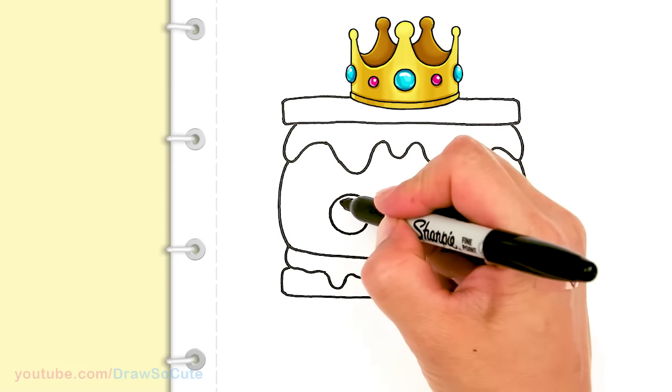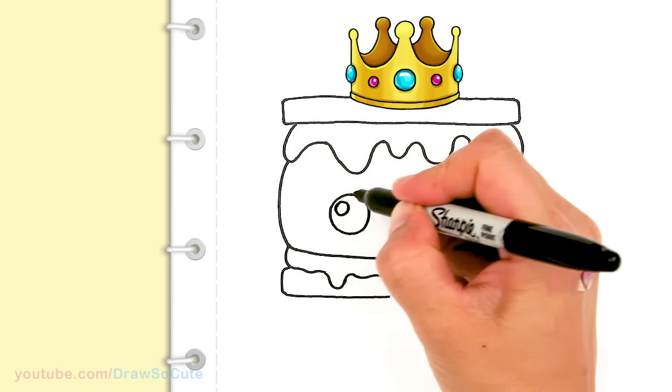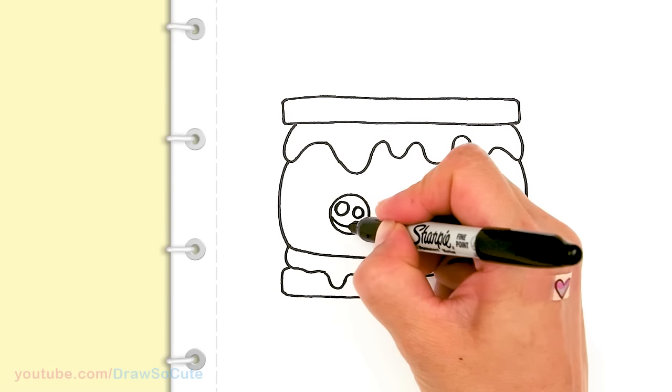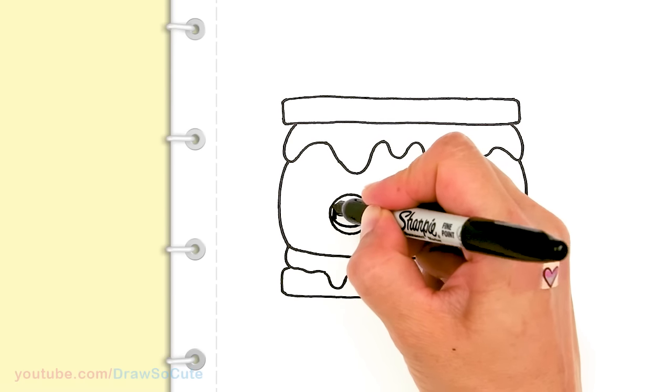And let's make them Draw So Cute eyes. I'm going to put two small circles inside for highlight and a curved line at the bottom, and shading the top.